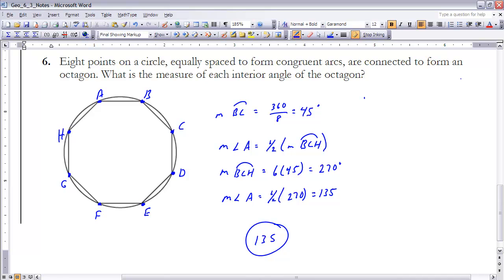Number 6 says eight points on a circle, equally spaced to form congruent arcs, are connected to form an octagon. What is the measure of each interior angle of the octagon? If we attack this problem from an inscribed angle point of view, if I look at any one of the angles, for instance angle A, I know that the measure of that angle is going to be equal to half the measure of the inscribed arc. Here's the arc BC all the way around to H. The measure of angle A is going to be half of that measure.